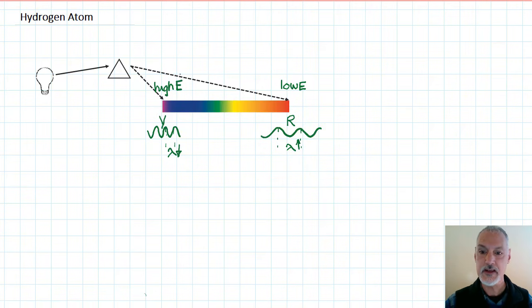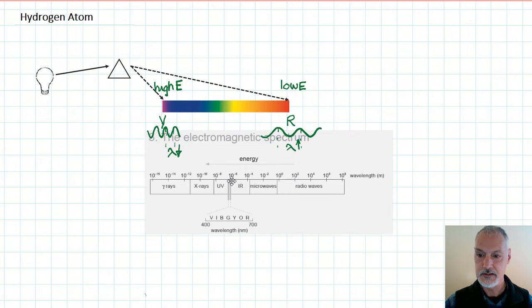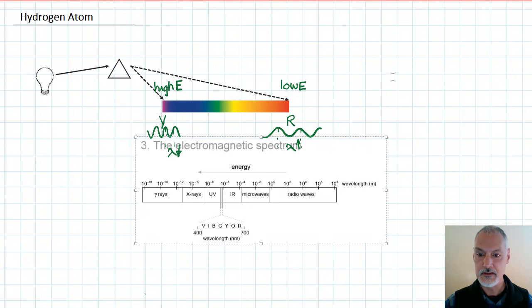Now this information is available in our IB data booklet. I take this out of here, it's called the electromagnetic spectrum. We can see here the violet light down at this end and its wavelength 400 nanometers. Nano standing for 10 to the minus 9. At this end our red light 700 nanometers.